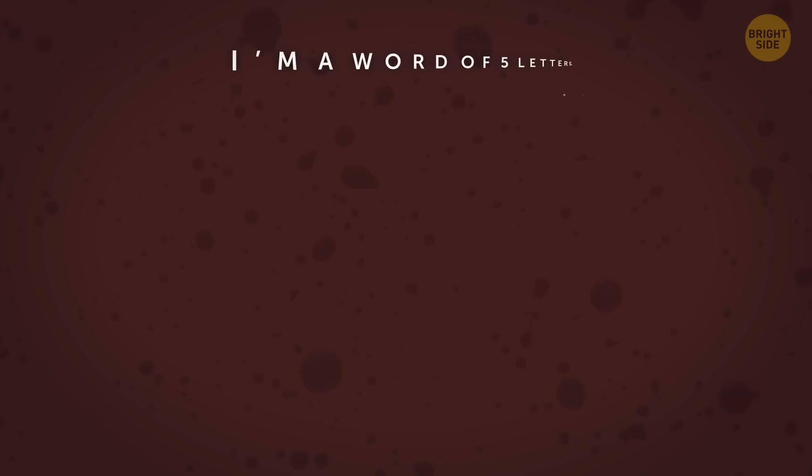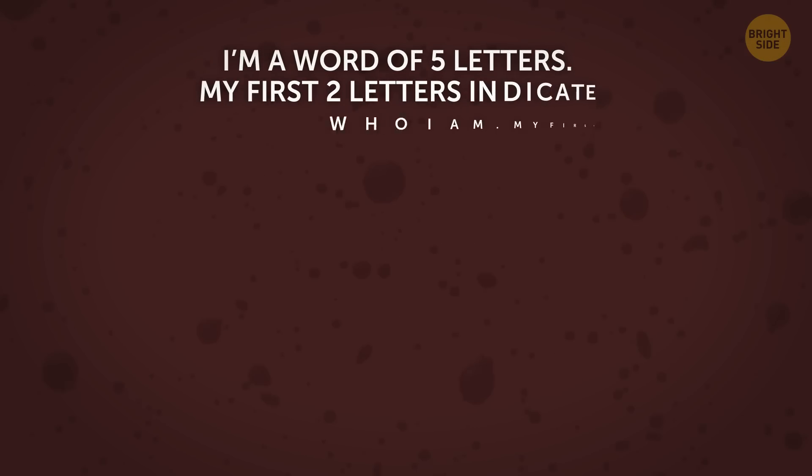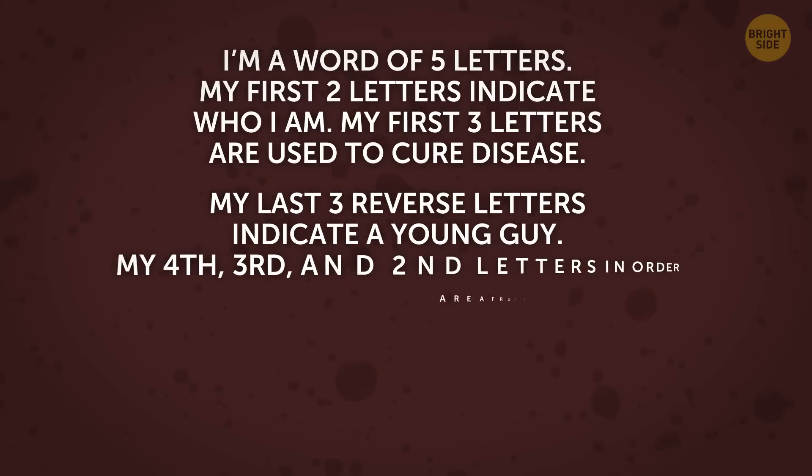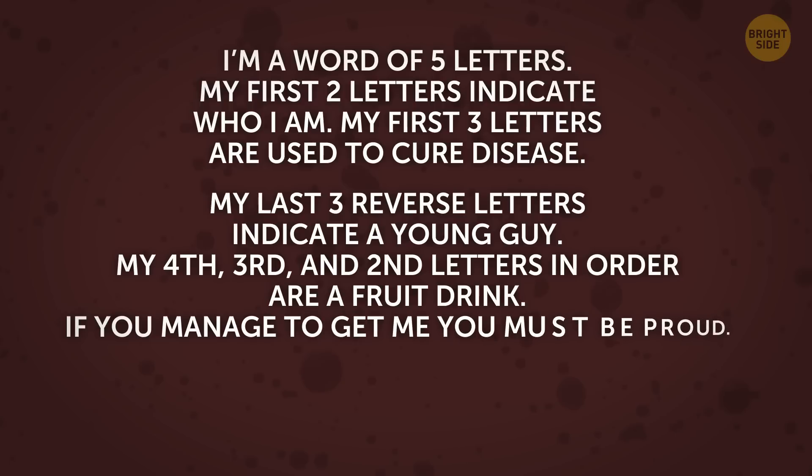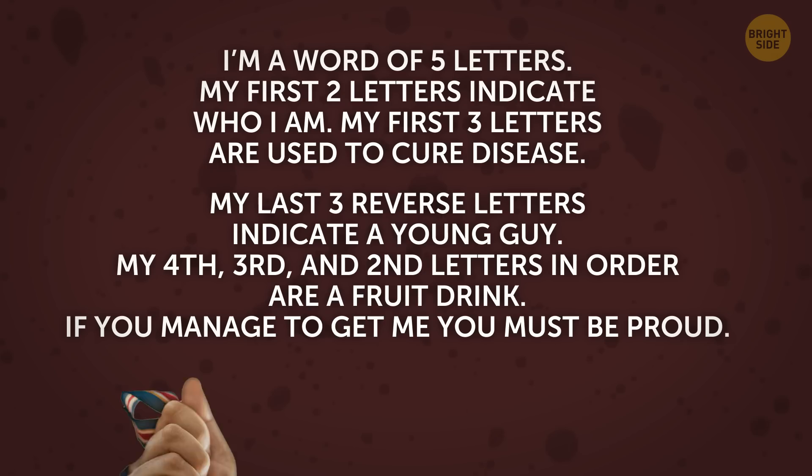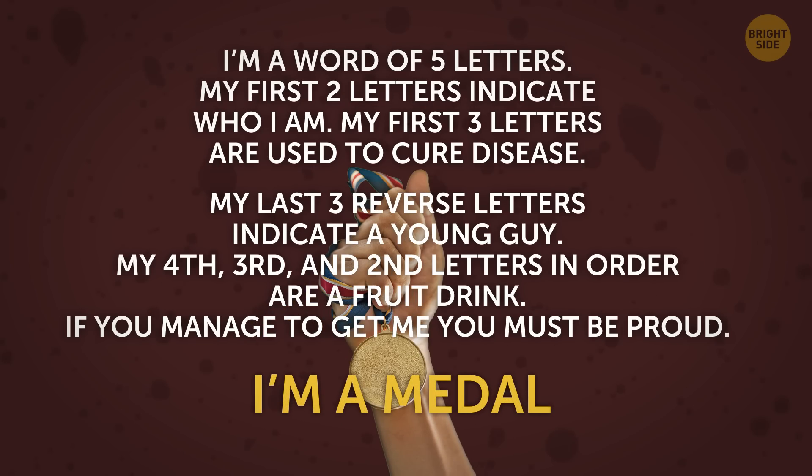I'm a word of five letters. My first two letters indicate who I am. My first three letters are used to cure disease. My last three reverse letters indicate a young guy. My fourth, third and second letters in order are a fruit drink. If you manage to get me, you must be proud. Who am I? I'm a metal.